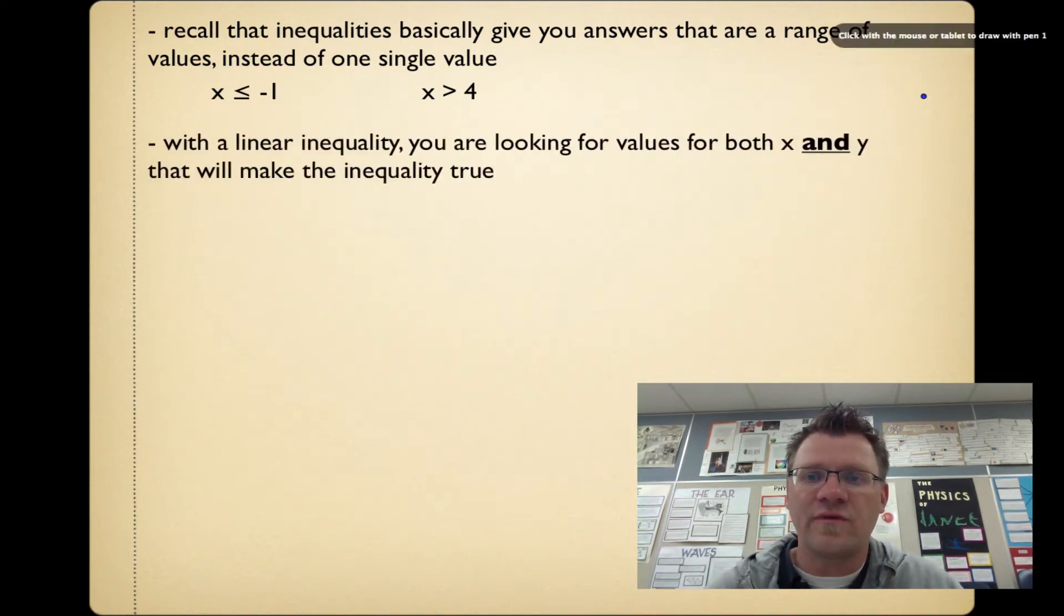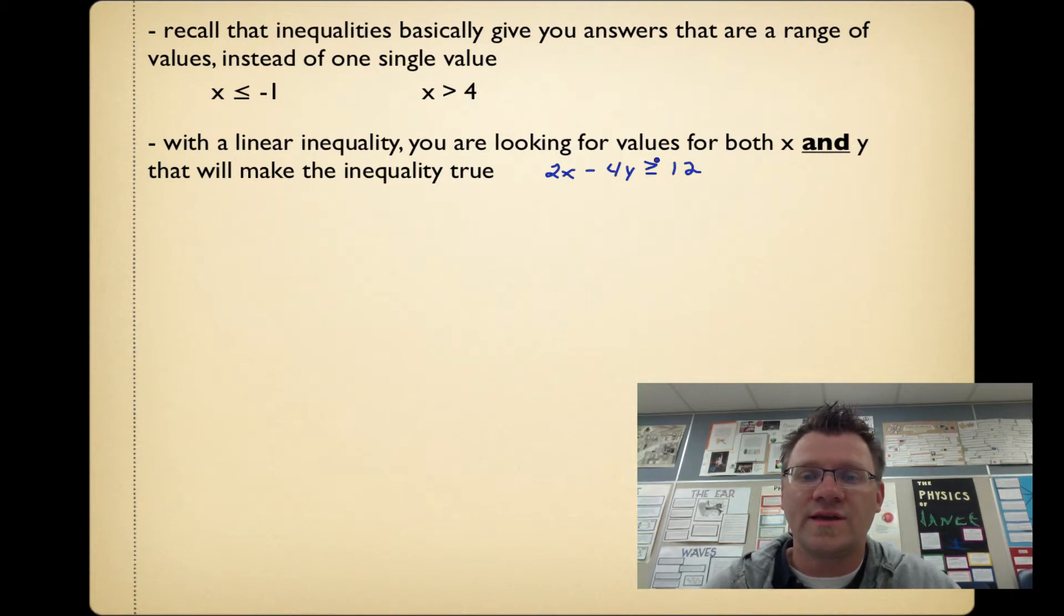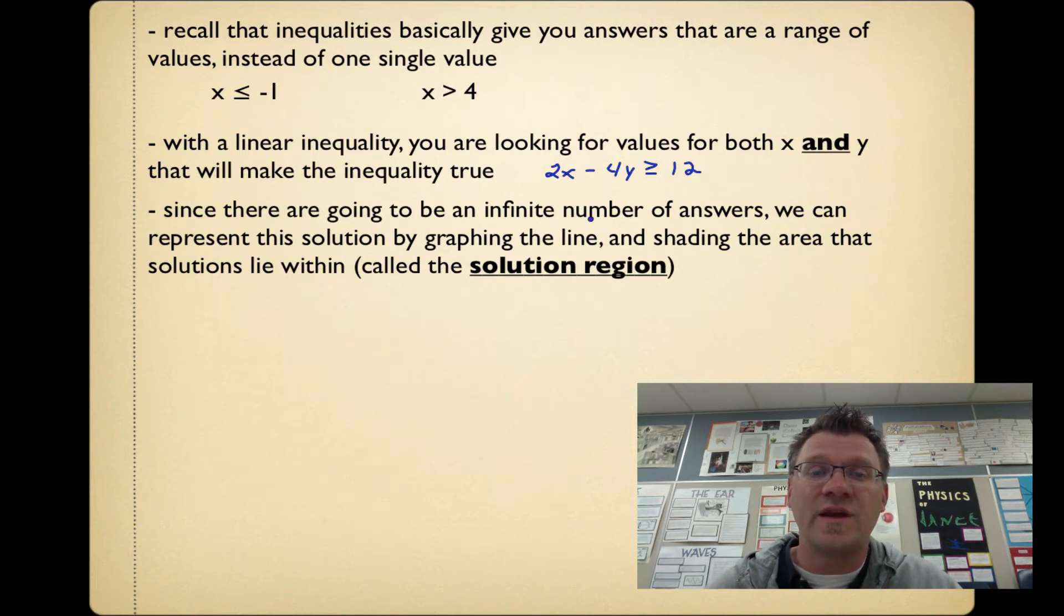With a linear inequality, you're looking for values for both x and y that make the inequality true. So you might have something like 2x minus 4y has to be greater than or equal to 12. You're looking for any x value and any y value that when you plug it in there, you're going to get an answer that's greater than or equal to 12. Since there are going to be an infinite number of answers, we can represent the solution by graphing the line and shading the area that the solution lies within, called the solution region.